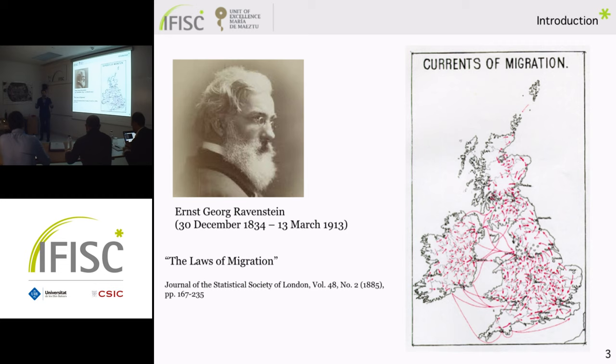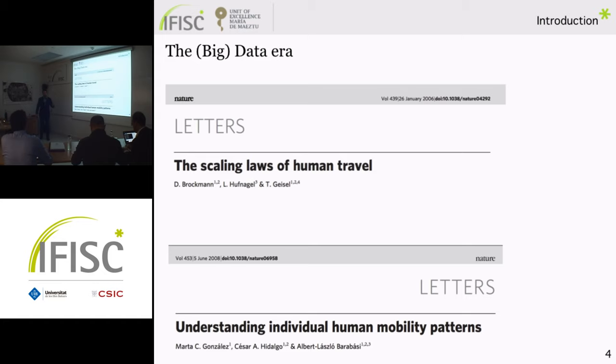However, Ravenstein and many others during the 20th century were strongly limited by scarce data — only censuses, surveys, and mobility information accounting for movement from home to work, which is not enough to have a broad perspective of human mobility. Thanks to digitalization, we now have many types of data, driving us into an era of data-driven modeling of human mobility. This era is identified with two key papers: one studied individual movement through the displacement of banknotes, but the problem was that one banknote could include displacements of many individuals. Two years later, mobile phone data provided a more realistic picture.